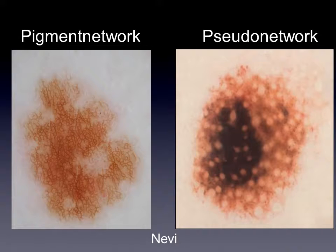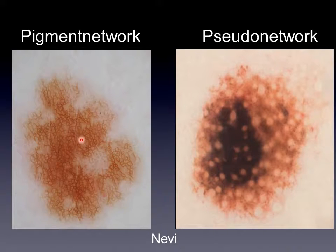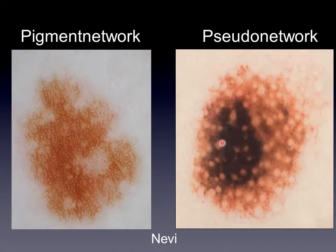Here we have two nevi. On the left side, you see the normal reticular network with the fine lines and the regular holes. On the right side, you see the pseudonetwork, and you can really detect easily the difference. The holes are much larger and also more roundish. This is a typical appearance of a nevus in the face.